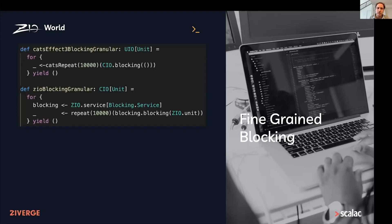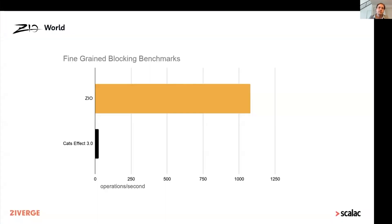We might think these two should perform the same — but not so much. The ZIO operator is dramatically faster. You might say, Adam, what kind of trickery are you pulling here? Those operations looked exactly the same and very low level. How can the performance possibly be that different between the two?